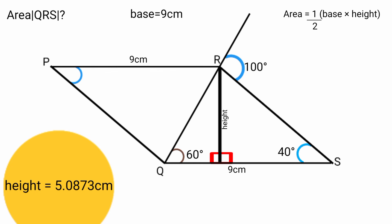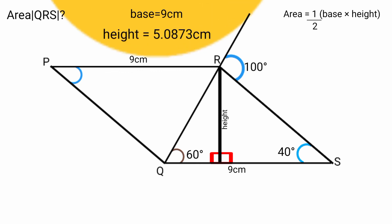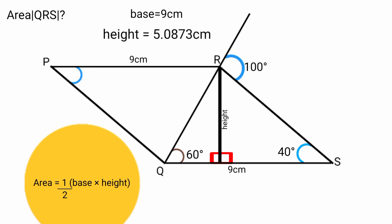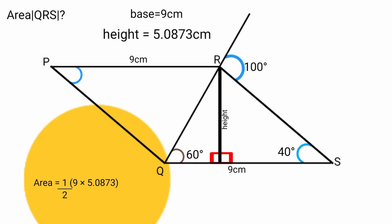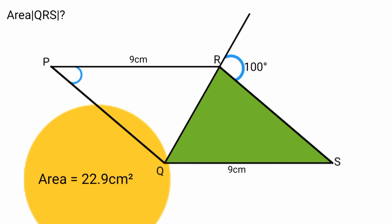Now we have the height of triangle QRS as approximately 5.0873 centimeters and the base as 9 centimeters. Substituting into the area formula: area equals half times base times height equals one-half times 9 times 5.0873, which equals approximately 22.9 square centimeters. So the area of triangle QRS is approximately 22.9 cm².